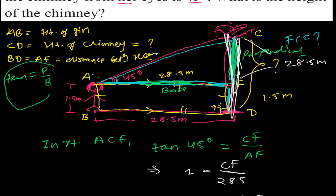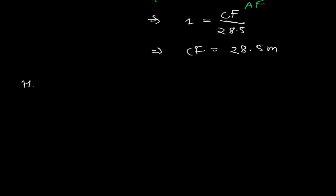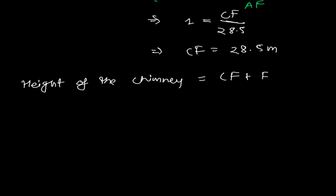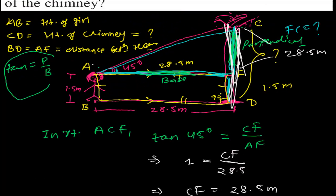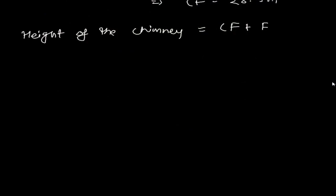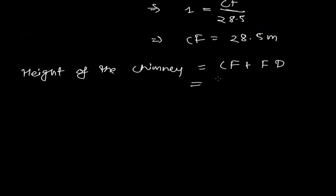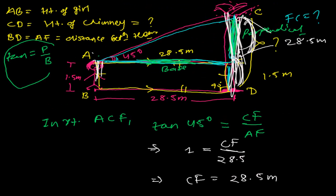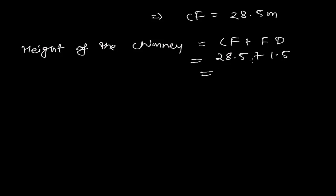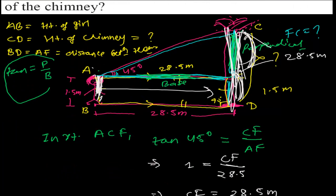We got CF = 28.5 meters. Now the total height of the chimney CD equals CF plus FD. CF is 28.5 meters and FD is 1.5 meters — equal to the height of the girl, since opposite sides of a rectangle are equal. So 28.5 + 1.5 = 30 meters. The height of the chimney is 30 meters.